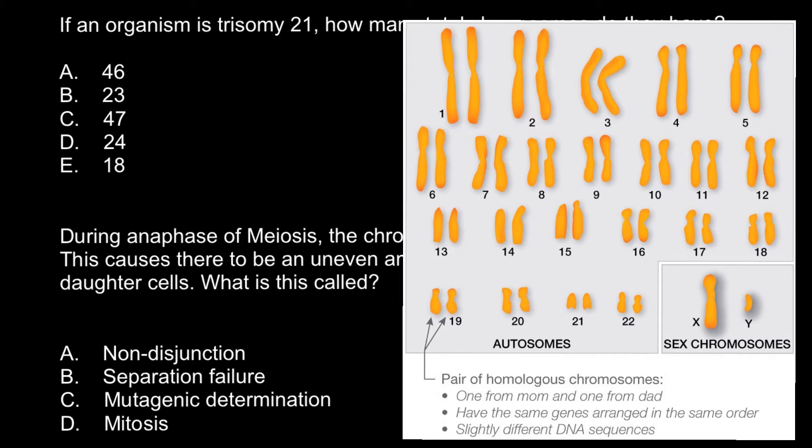Usually trisomy can only happen with the smallest chromosomes. So we can find trisomy in this range, not for all chromosomes.